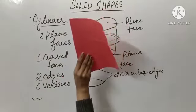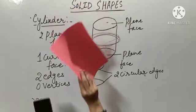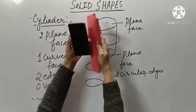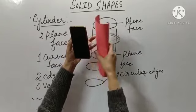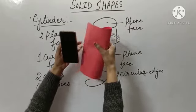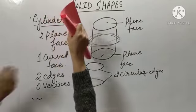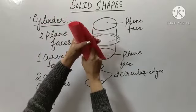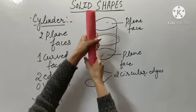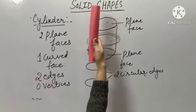This is my rectangular paper. Now, see carefully — what I am doing. I am folding it. I am folding it. See, I got my cylinder.